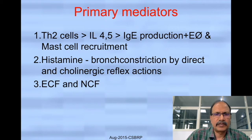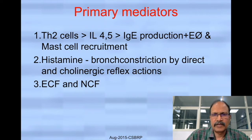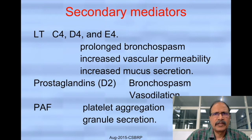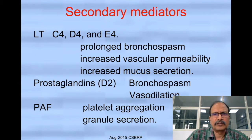Eosinophilic chemotactic factor and neutrophilic chemotactic factors are also released in these reactions, causing increased entry of eosinophils and neutrophils to the site of reaction, especially the tracheobronchial tree. Secondary mediators — leukotrienes C4, D4, and E4 — are responsible for bronchospasm and increased vascular permeability, and they stimulate the mucous glands to produce lots of mucin. This results in bronchospasm, increased vascular permeability leading to edema, and increased mucous production.